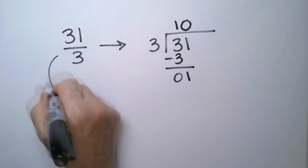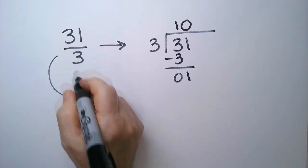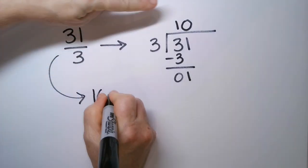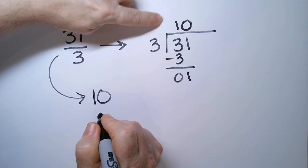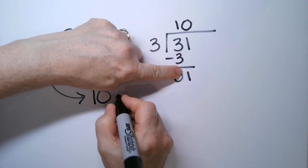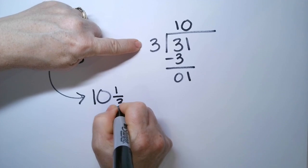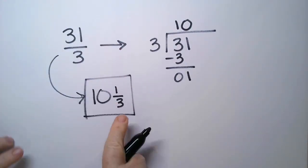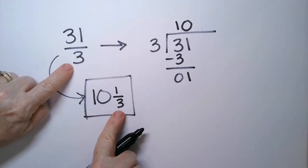So my answer to 31 thirds is 10 is the whole number because it goes in at least 10 times plus a little extra. How much extra? 1 over 3. I want you to notice the denominators are the same. We don't change those.